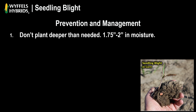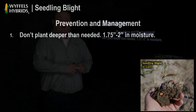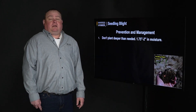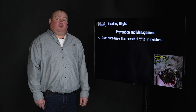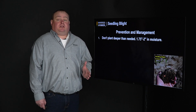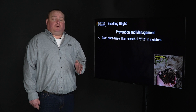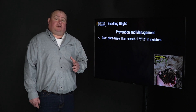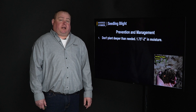Other than seed treatment, one of the big things is don't plant deeper than needed. An inch and three-quarters to two inches deep — the old-timers' two knuckles — is perfect for planting your corn. You want to make sure you're planting into some moisture. Three inches is really the max if you're planting into dry soil, and if you can't get into moisture at three inches, I would wait for a rain.